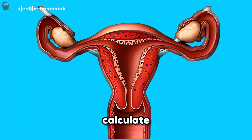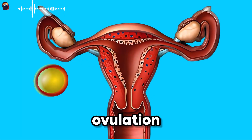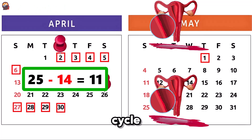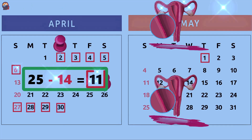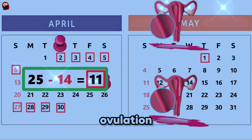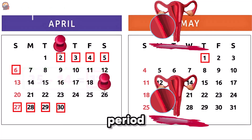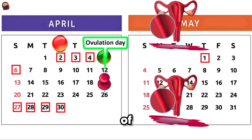The next step is to calculate the day of ovulation. Subtract 14 days from the length of the menstrual cycle: 25 minus 14 equals 11. Therefore, ovulation occurs on the 11th day of the cycle. Count 11 days from the first day of the period, April 2nd — the day of ovulation is April 12th.